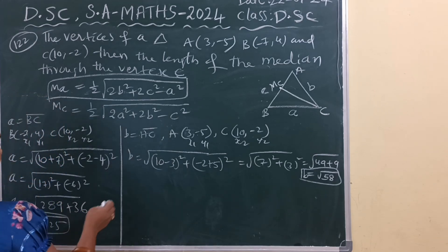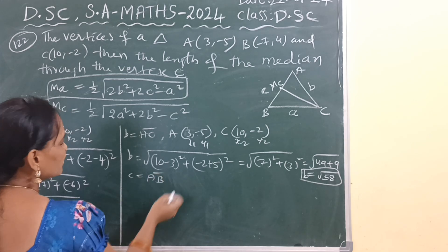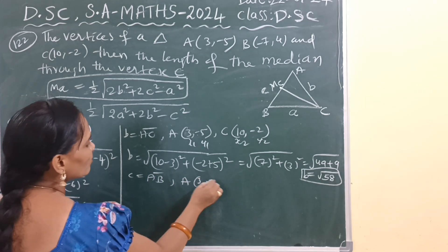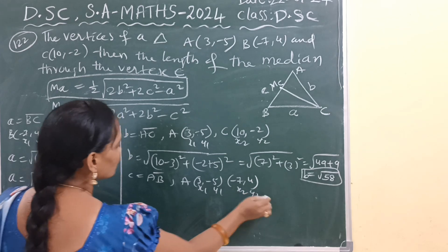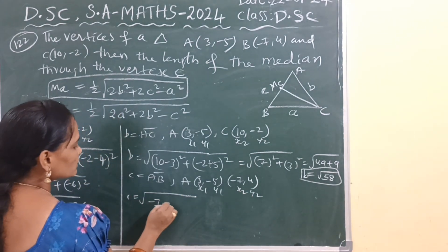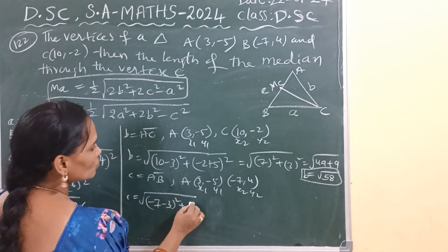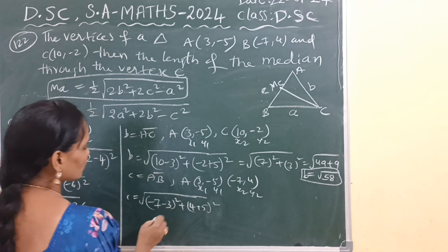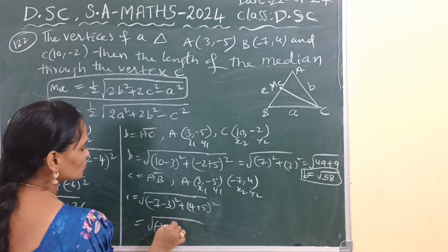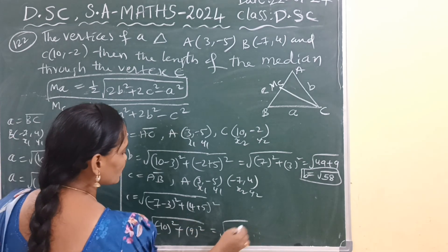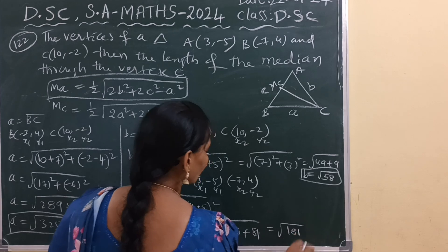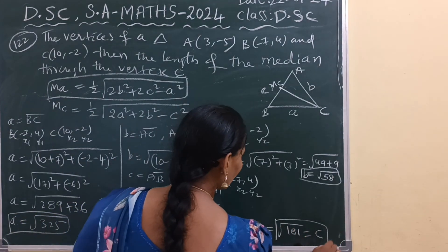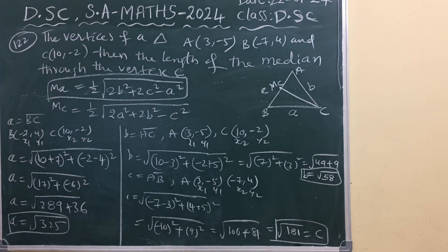For side c, we find distance AB. A is (3, −5) as X1, Y1 and B is (−7, 4) as X2, Y2. Using the distance formula: c = √[(−7−3)² + (4−(−5))²] = √[(−10)² + 9²] = √[100 + 81] = √181. So c squared equals 181. We now have a² = 325, b² = 58, c² = 181.